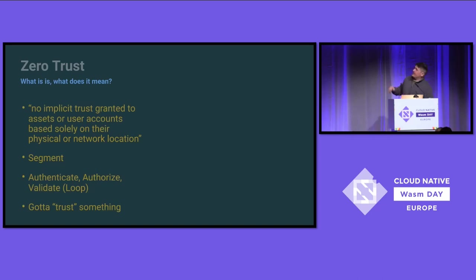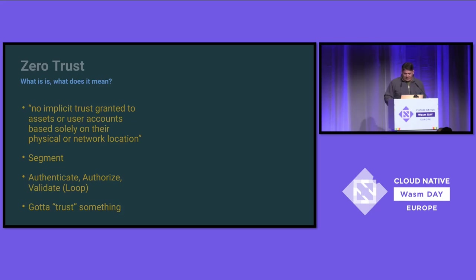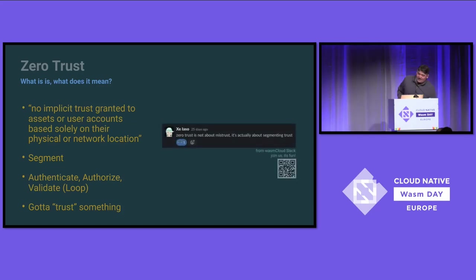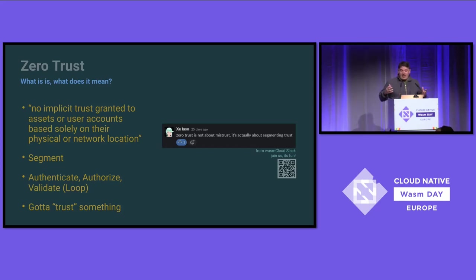These are the textbook definitions of zero trust. I read them all and distilled it to what I could. I was sitting in the WasmCloud Slack channel when one of my coworkers said this, and I finally realized: zero trust is not about mistrust — it's actually about segmenting trust. That really opened my eyes and provided me a pathway. I now see how WebAssembly, WasmCloud, and these other pieces will really tie this together.